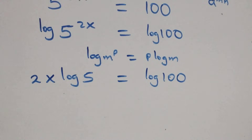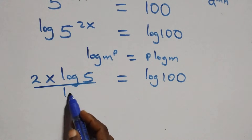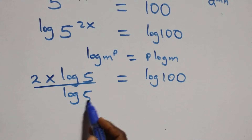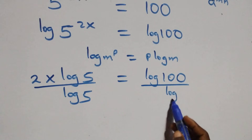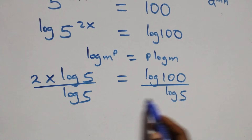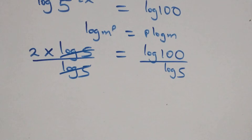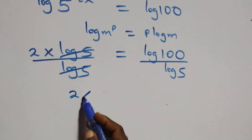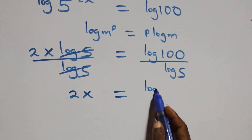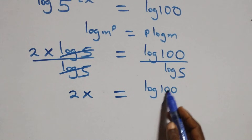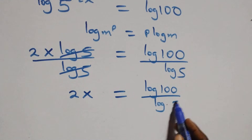The next step: we divide both sides by log 5. Log 5 cancels each other, and we have 2x equals to log 100 over log 5.